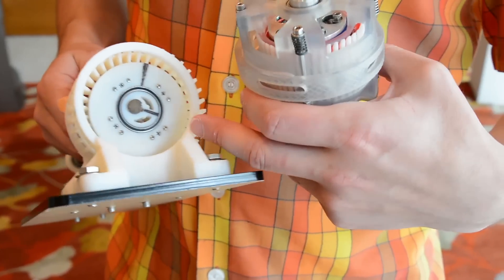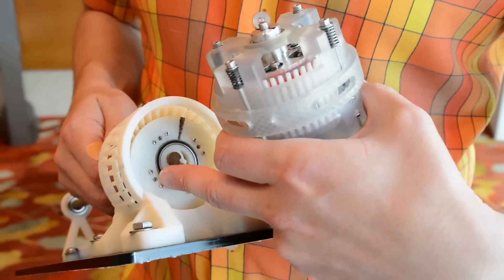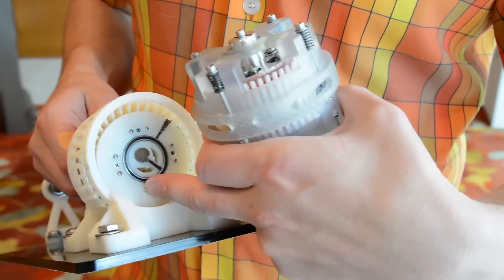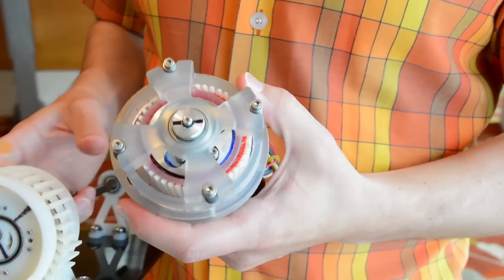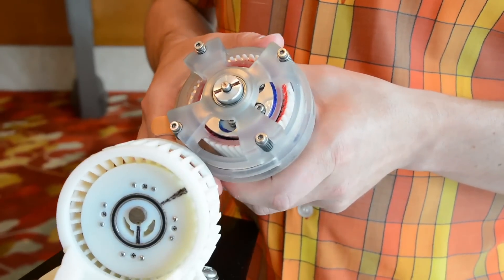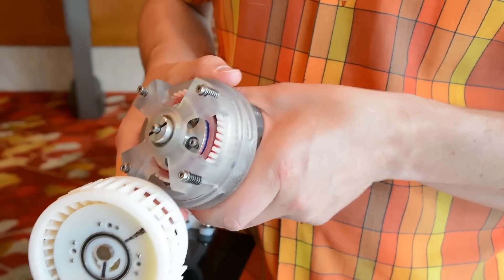The very first one we made, we could only change the transmission ratio by twisting a screwdriver. Whereas this one here has a nice convenient way of changing the ratio where you simply rotate this collar.